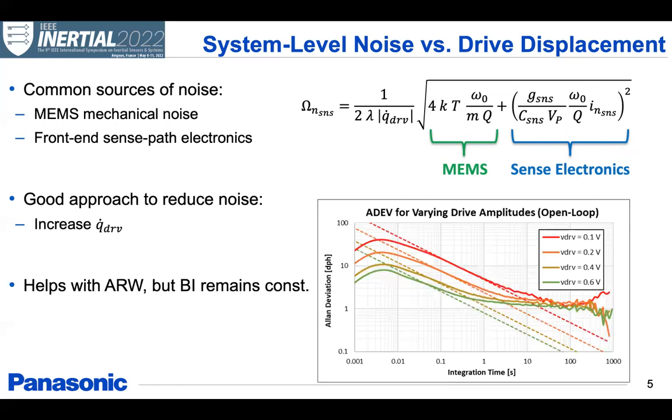And when we look at the results for how the noise of the system depends on this Q drive, we can see that as we increase its value, the thermal noise, which is shown here as the ARW region of an Allan deviation plot, decreases accordingly. But unfortunately, the bias instability of the part does not improve. This is an indication that the main source of this bias instability is not from the flicker noise of the front-end electronics.